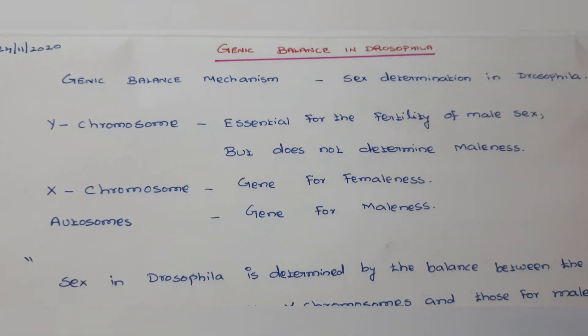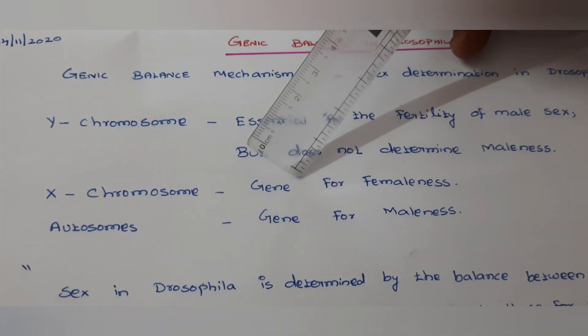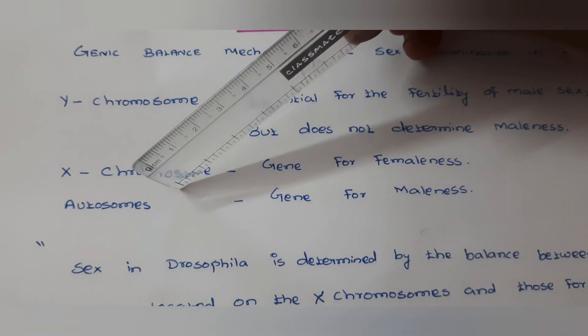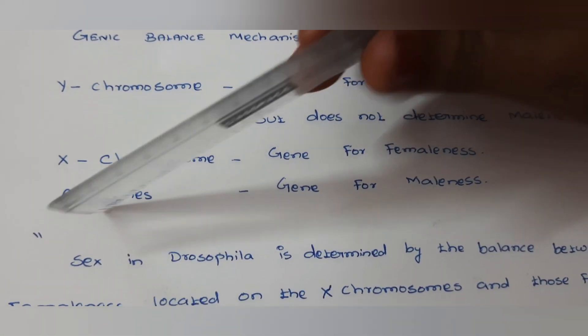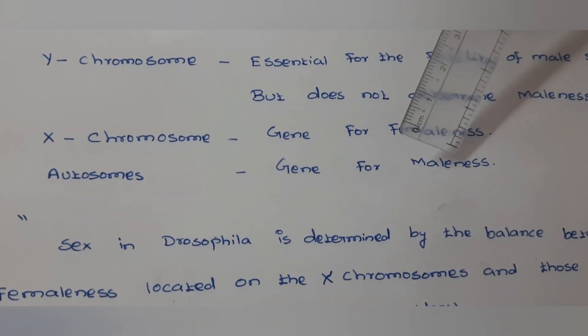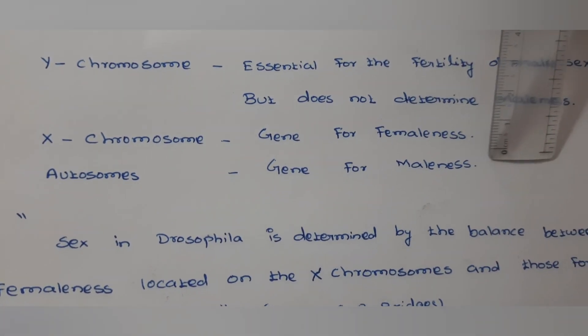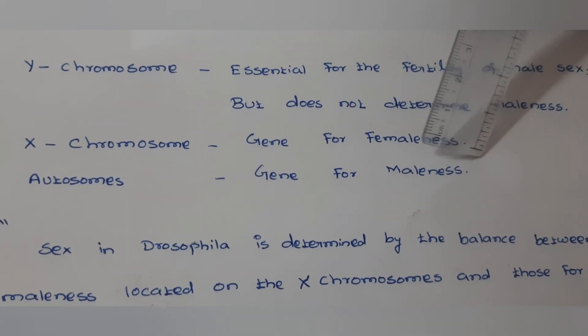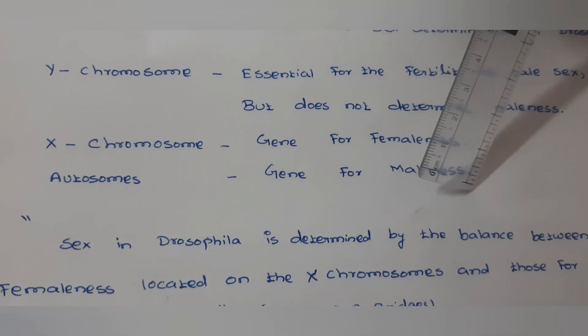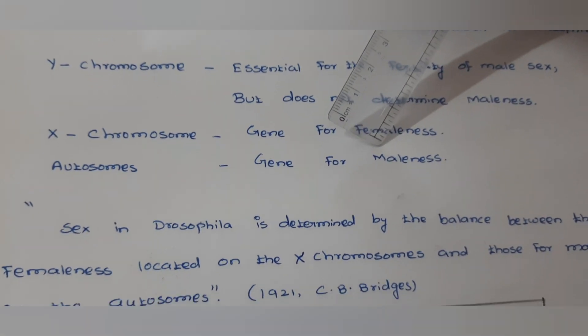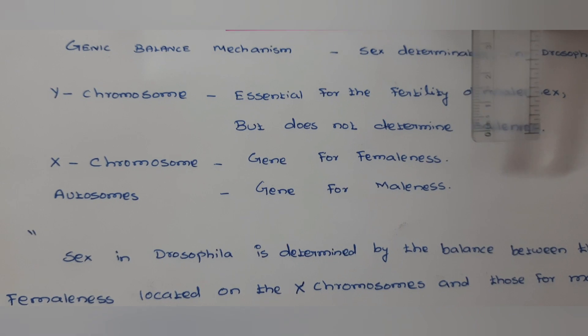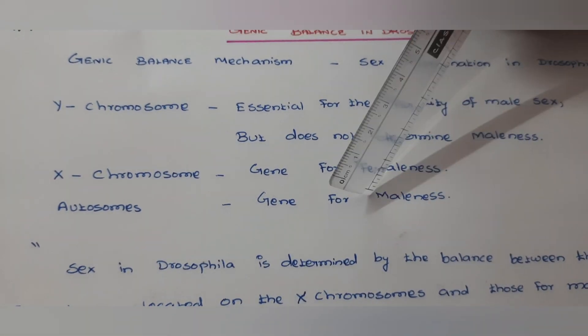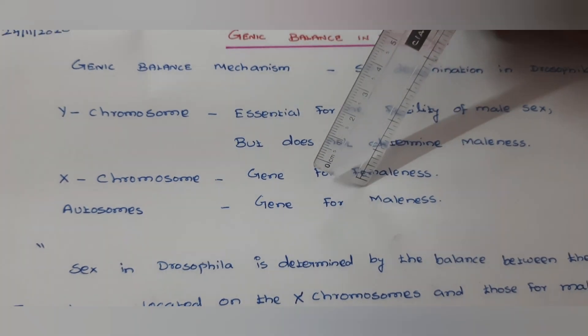Then X chromosome. X chromosome contains genes for femaleness as well as female sex. Autosomes, the body chromosomes, contain genes for maleness, that means the characteristic features of male. What are the characteristic features of male? All physical appearances: testis, breast development, voice changes, beard, mustache. All are the characteristics of male, the masculineness.